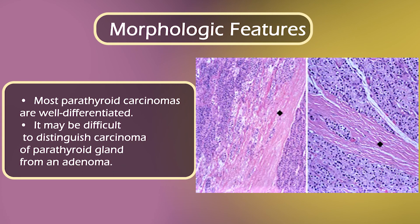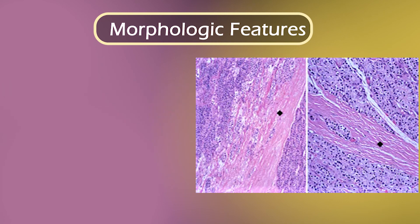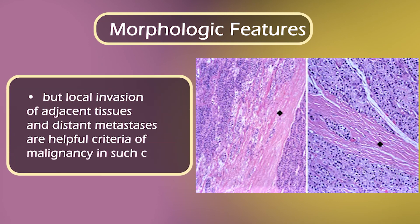It may be difficult to distinguish carcinoma of the parathyroid gland from an adenoma, but local invasion of adjacent tissues and distant metastases are helpful criteria of malignancy in such cases.